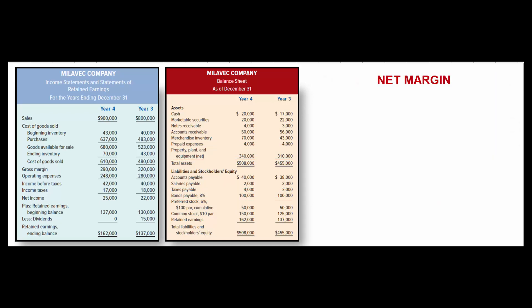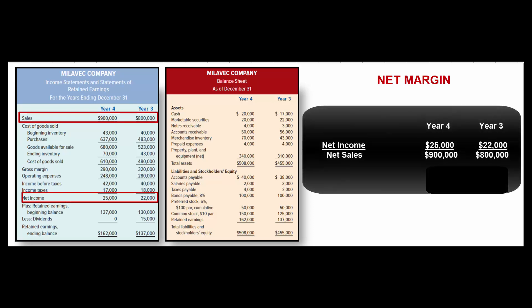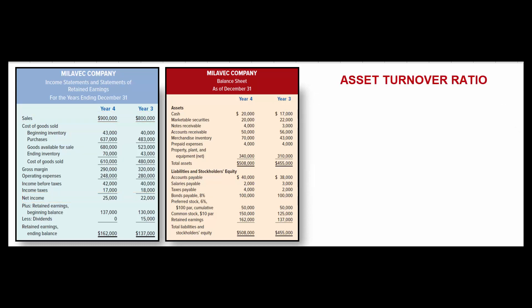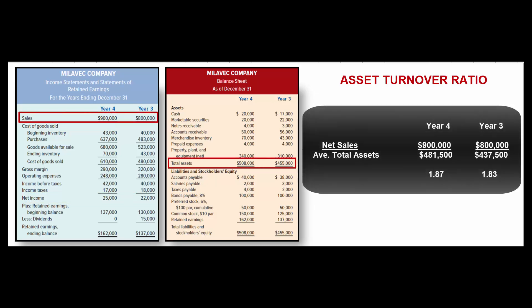Now let's look at profitability measures. Net margin is net income over net sales: 2.78% for year four and 2.75% for year three. Next is the asset turnover ratio — net sales over average total assets — showing how effectively we use assets to generate sales. If competitors generate the same sales with fewer assets, they're doing a better job. For year four it's 1.87; for year three it's 1.83.